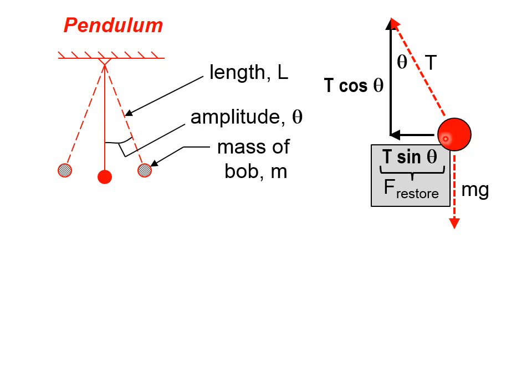As the bob swings back, that restoring force is going to get smaller and smaller until it hits zero when it gets to the equilibrium position. Then it overshoots, and the restoring force then starts pointing to the right to try and bring the bob again back to equilibrium.